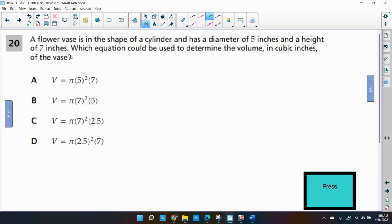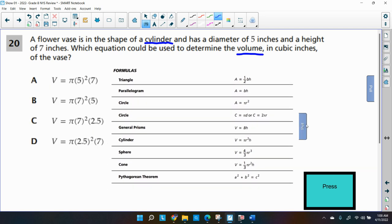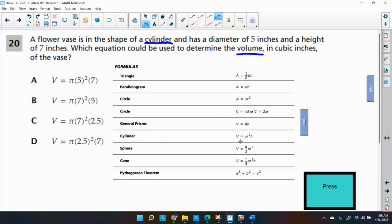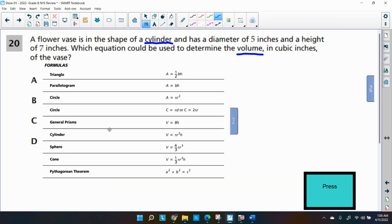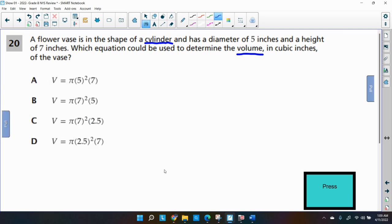A flower vase is in the shape of a cylinder and has a diameter of five inches and a height of seven inches. Which equation could be used to determine the volume in cubic inches of the vase? So we want the volume. We're dealing with the problem of volume and the shape is a cylinder. What's good about this state test? They give you a formula sheet. And I'm going to pull it out. And I just got to look up cylinder. There's cylinder. There's the volume formula. Volume equals pi r squared times the height.